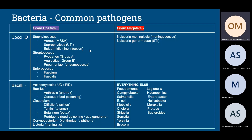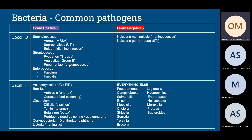For Streptococcus, you need to know Group A (pyogenes), Group B (agalactiae), and Strep. pneumoniae (pneumococcus). For Enterococcus, the two main species causing human infection are Enterococcus faecium and Enterococcus faecalis. So to summarise gram-positive cocci: three Staph species, three Strep species, and two Enterococcus species.